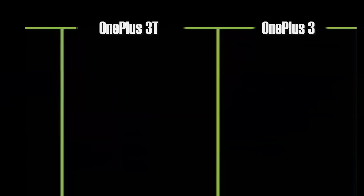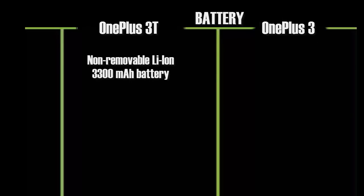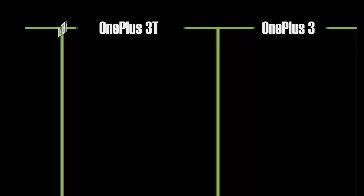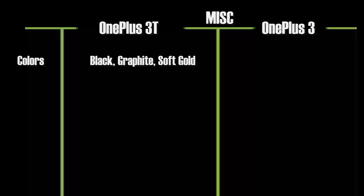Talking about the battery, the OnePlus 3T comes with a non-removable lithium-ion battery of 3300mAh, while the OnePlus 3 comes with a 3000mAh battery. You can purchase the OnePlus 3T in black graphite and soft gold, while the OnePlus 3 is only available in graphite and soft gold.